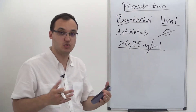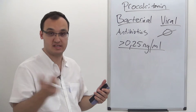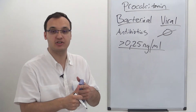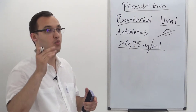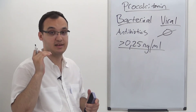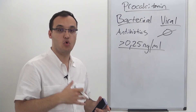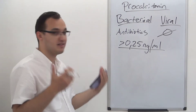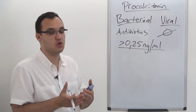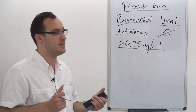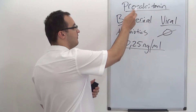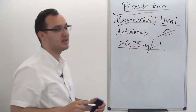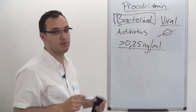Other causes of procalcitonin rise include stroke, ischemic stroke, cerebral bleeding, and pancreatitis. But if you have a patient who does not have any of these conditions, and you suspect only a pneumonia case where the procalcitonin level has increased, then you can be quite sure that it's a bacterial infection, which means you can give antibiotics.